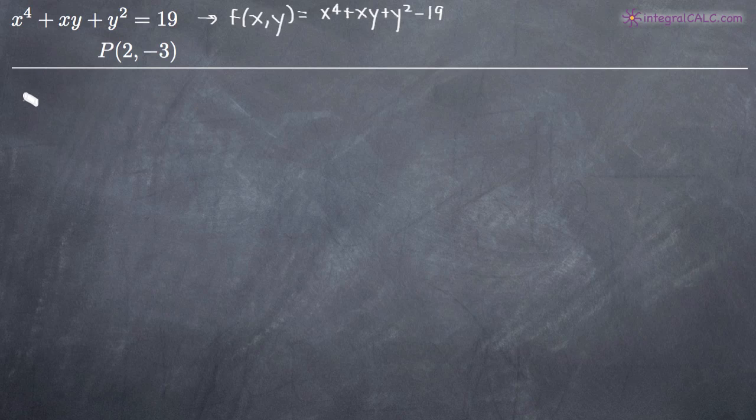So the first thing we're going to do is find the gradient vector and the way that we do that is by taking the partial derivatives of f with respect to both x and y. So let's go ahead and take our partial derivatives first.